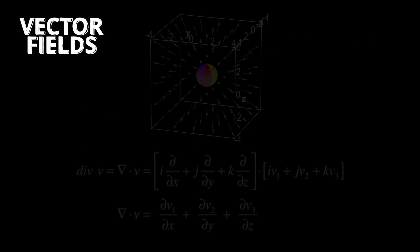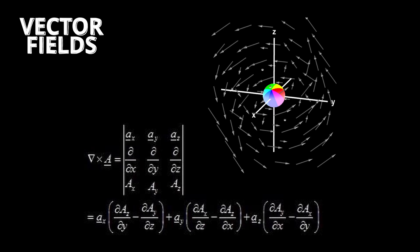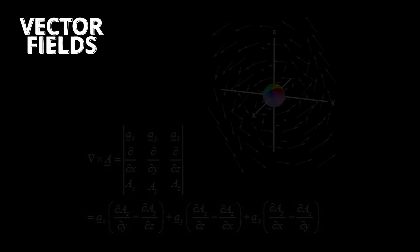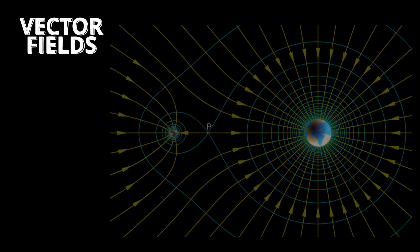Vector fields have a few important properties. First, the divergence of a vector field is an operator that measures how much a field spreads out from a point. Next, the curl of a vector field is another operator that measures the rotation about a point. Again, vector fields are very useful. For example, if we want to map out the gravitational field at every point in a certain region, we can use vector fields.